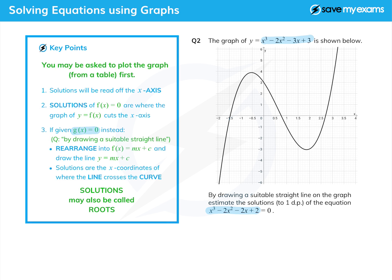Instead of minus 3x plus 3, it's minus 2x plus 2. And usually they will say by drawing a suitable straight line. The way we do it is the first thing we do is we rearrange g of x equals zero, rearrange it into f of x. So we've got the thing we've drawn equals something x plus something.